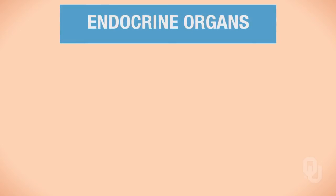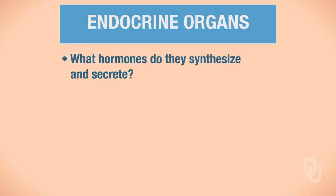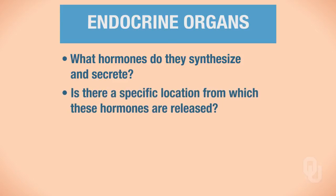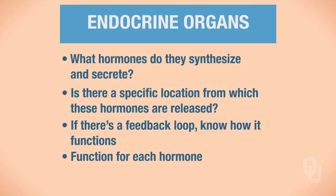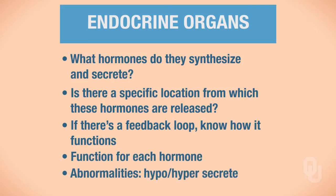Throughout the next series of lectures, we're going to be discussing various endocrine organs and what hormones they synthesize and secrete. It's very important that you understand for each endocrine organ what hormone is synthesized and secreted, whether there is a specific location from which hormones are released, and if there's a feedback loop, you need to know and understand how that feedback loop functions. You also have to understand the function for each hormone, and what happens with abnormalities — if you hypo- or hypersecrete these hormones, what would be the outcome?